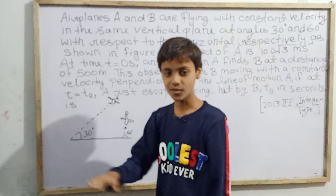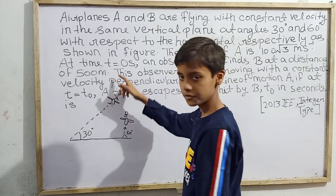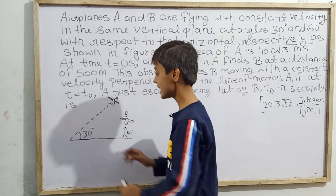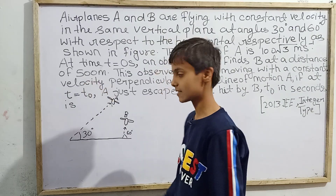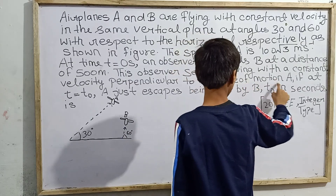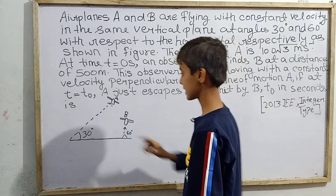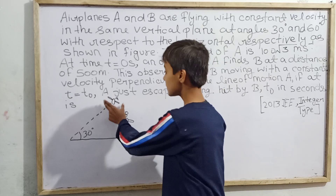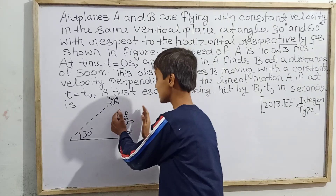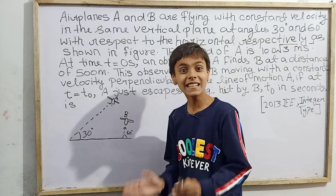The speed of airplane B is not given. At time t = 0 seconds, an observer in airplane A finds B at a distance of 500 meters. This observer sees B moving with a constant velocity perpendicular to the line of motion of A. At t = t₀ seconds, the observer is hit by airplane B. We have to find the value of t₀ in seconds.